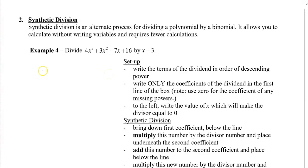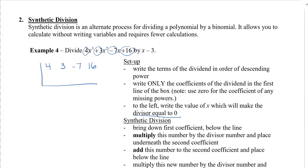We draw an L-shaped box. In the first line, we write the coefficients: 4, positive 3, negative 7, and 16. To the left of the box, we write the value of x that makes the divisor equal to 0. Since the divisor is x minus 3, setting it equal to 0 gives x equals positive 3. So we put the 3 on the left side of the box.